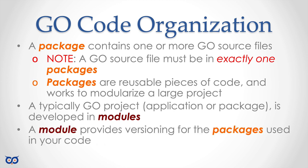Let's say I'm writing an application and my application uses a package for a database. The author of that database package releases version one, then a newer version two, but I'm only interested in using version one because version two breaks my application. The way I can make sure my Go application still uses version one is to create a module. That's what a module gives you — the ability to version-control the packages used in your code.